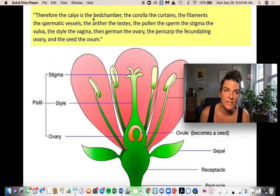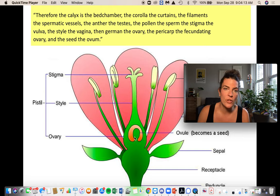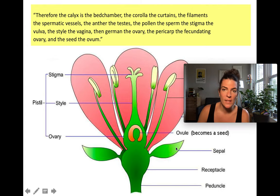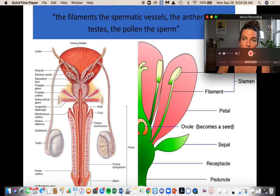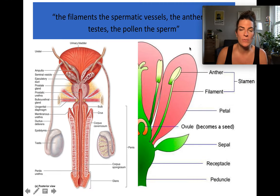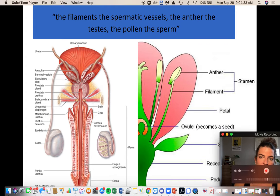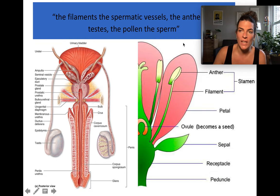The stigma at the top is the vulva, the style is the vagina, and then the germen — the ovary — the pericarp the fecundating ovary, and the seed the ovum. In many ways, plants are just like humans — they reproduce just like humans. The filaments, the spermatic vessels, the anther, the testes, and the pollen, the sperm — likening them to human anatomy.